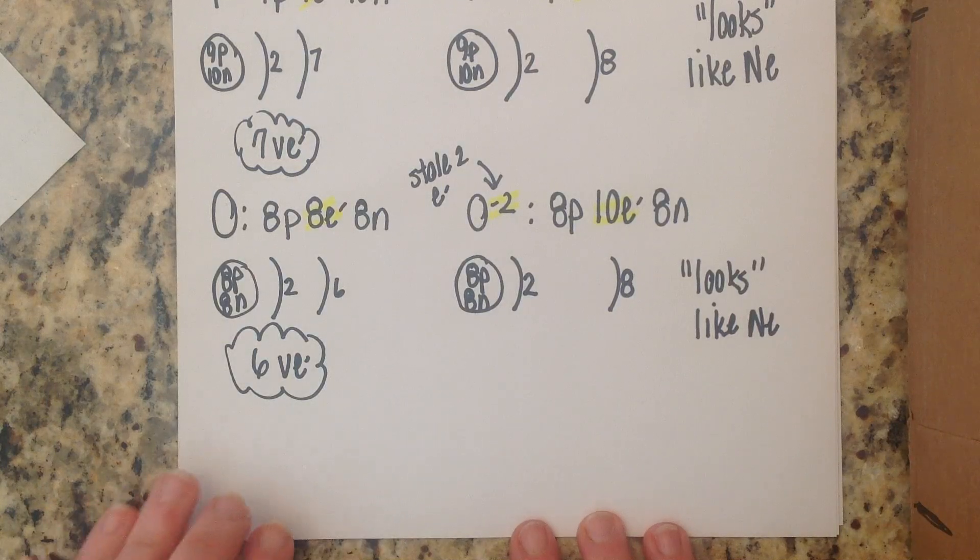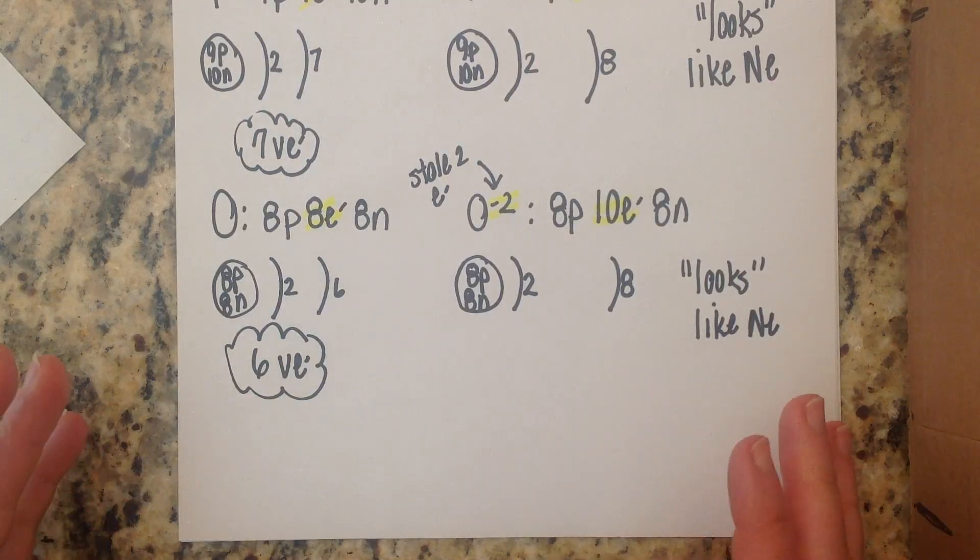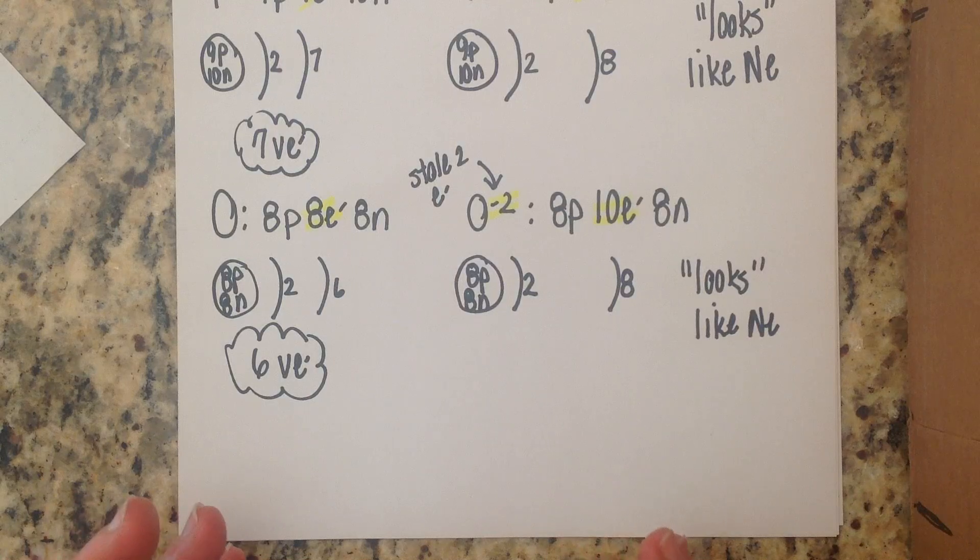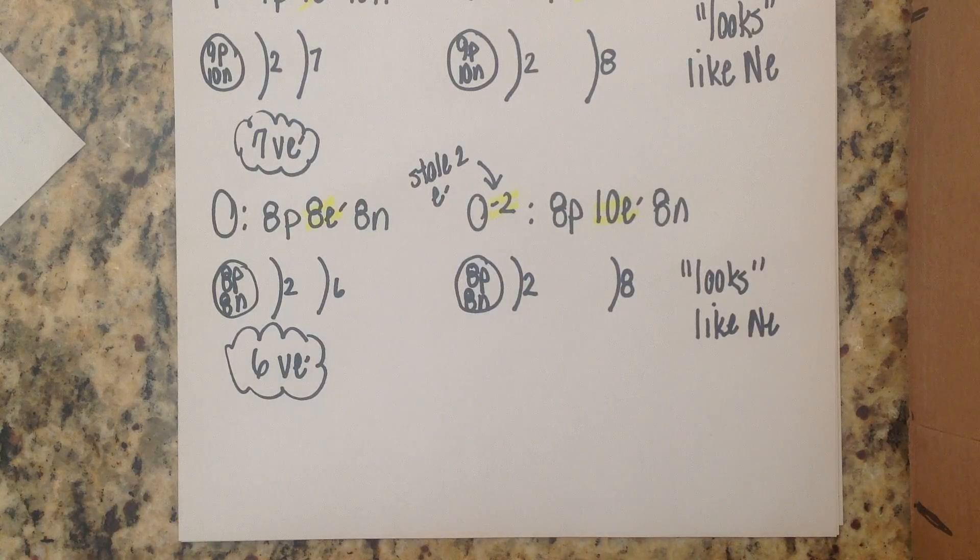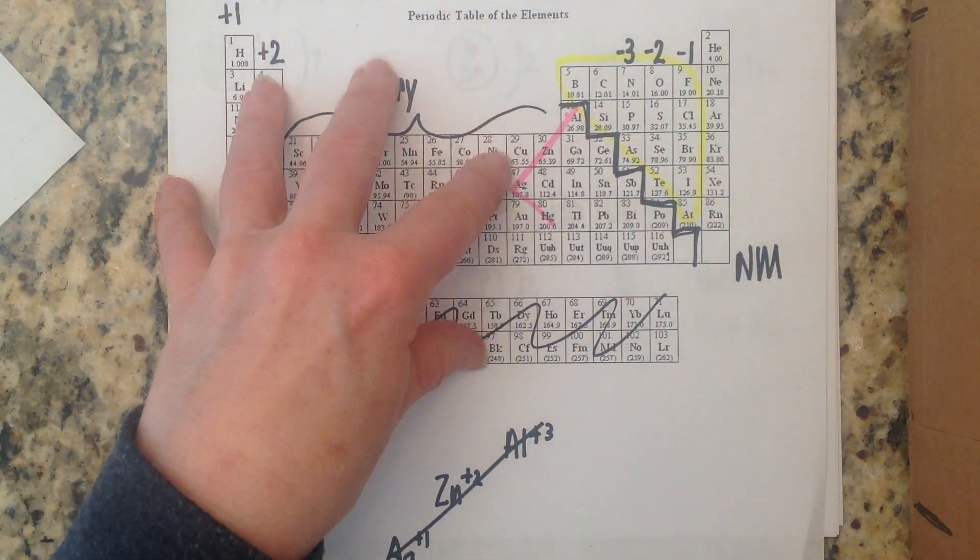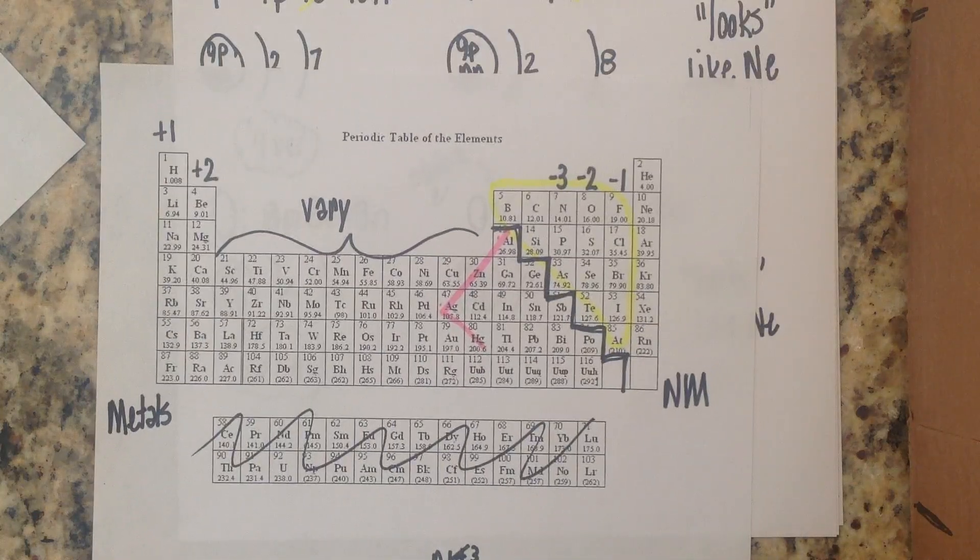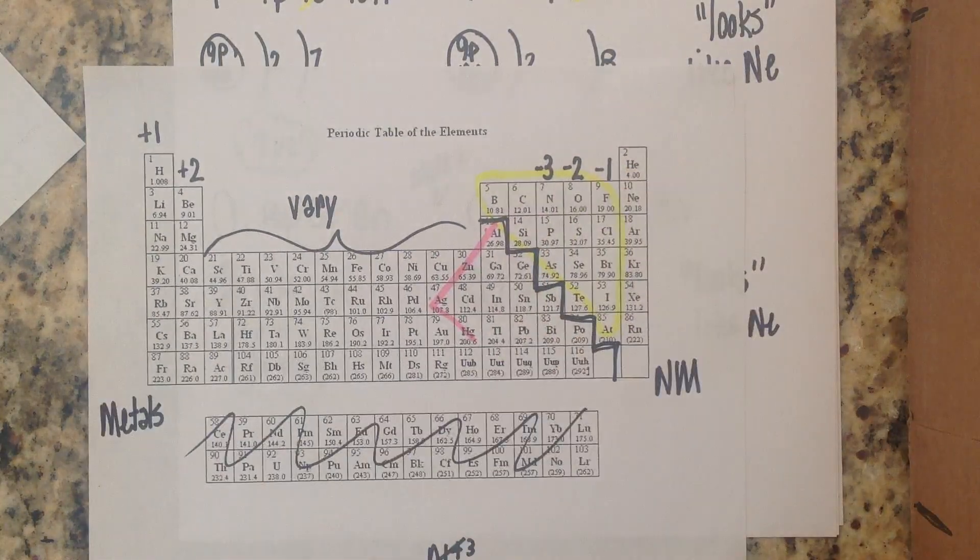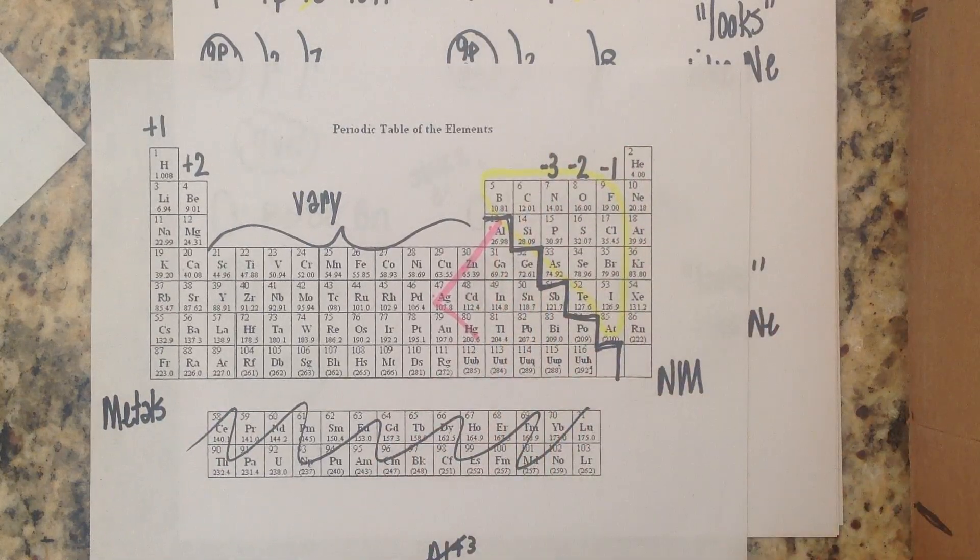So that's ions we know now that just to summarize everything one more time cations come from metals they are positive and they lose electrons and anions come from non-metals they are negative and they gain electrons we ignore the noble gases.